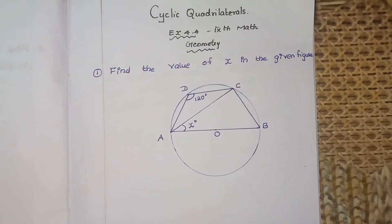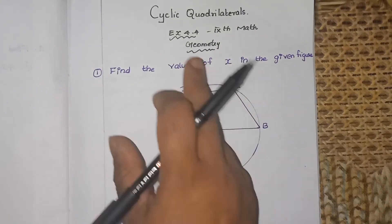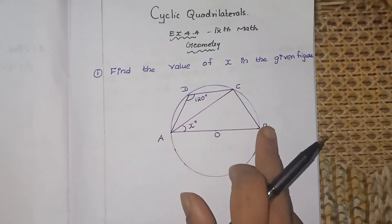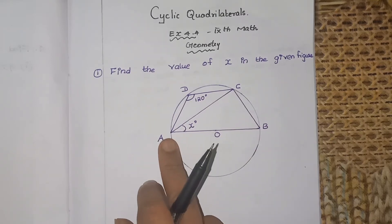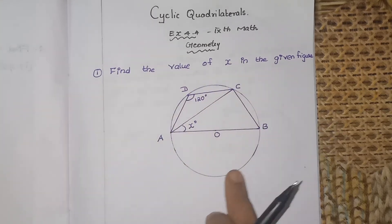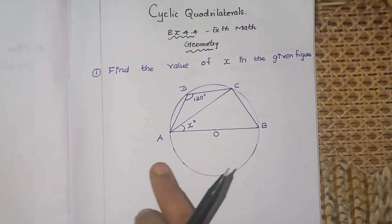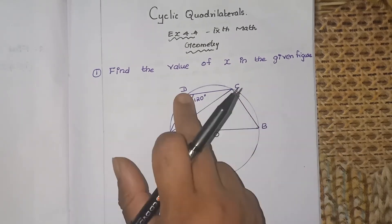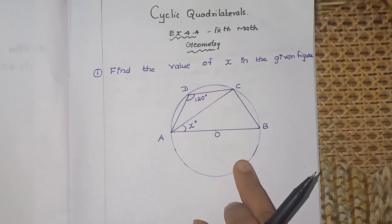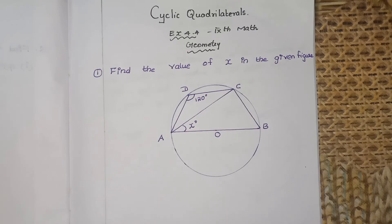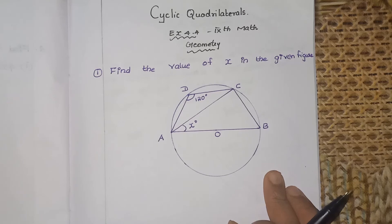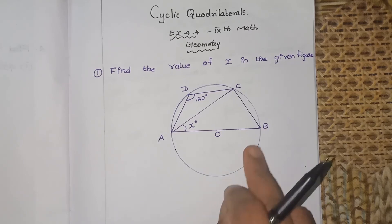The name itself says it — cyclic quadrilateral. A quadrilateral means a four-sided figure. Here, ABCD is a quadrilateral inscribed inside a circle. The condition is that the vertices A, B, C, and D must all lie on the circumference of the circle. Then you can call it a cyclic quadrilateral.